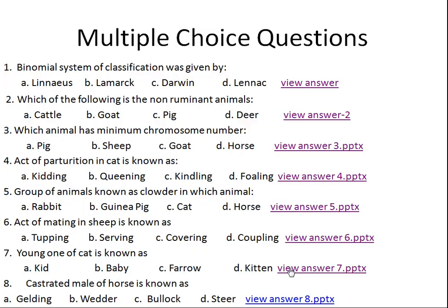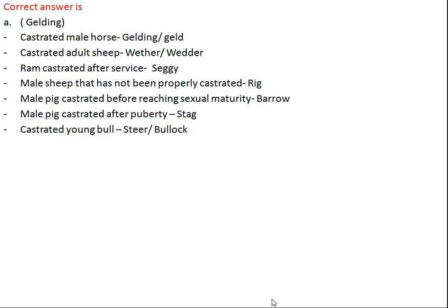Question number eight: a castrated male horse is known as what? Option A: gelding, Option B: wether, Option C: bullock, Option D: steer. The right answer is Option A, gelding — also called geld. A castrated adult sheep is called a wether or weder. A ram castrated after service is called a shaggy.